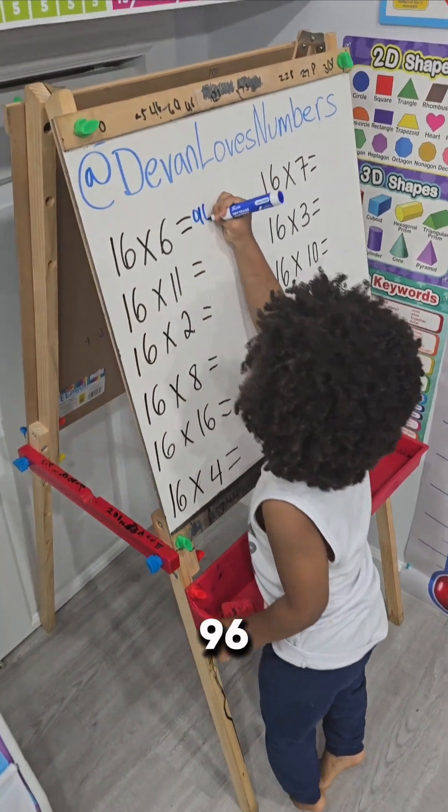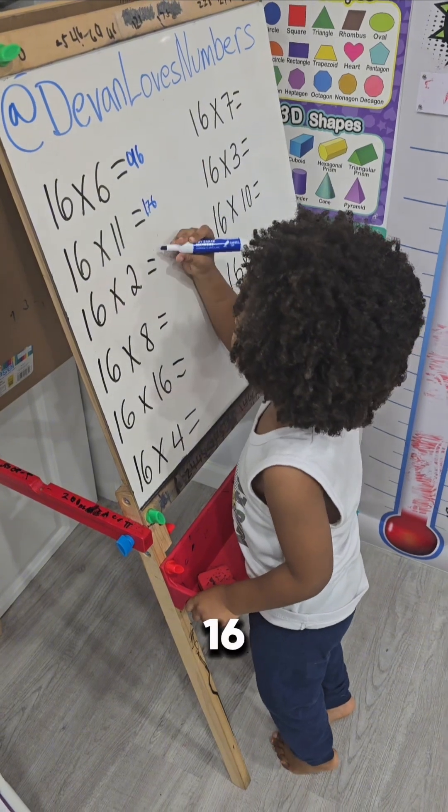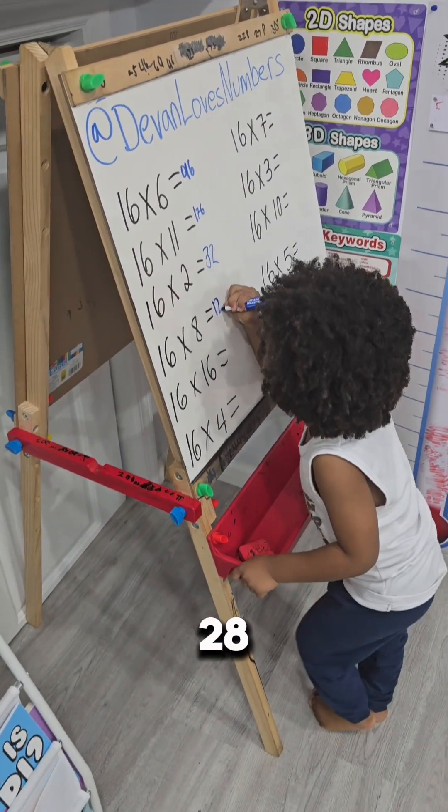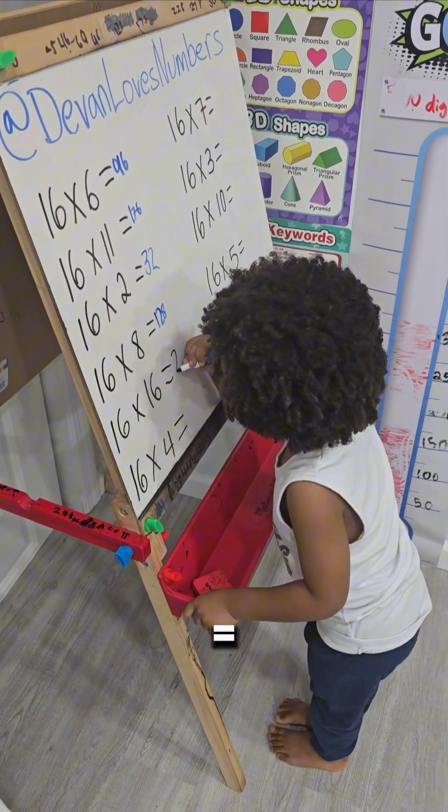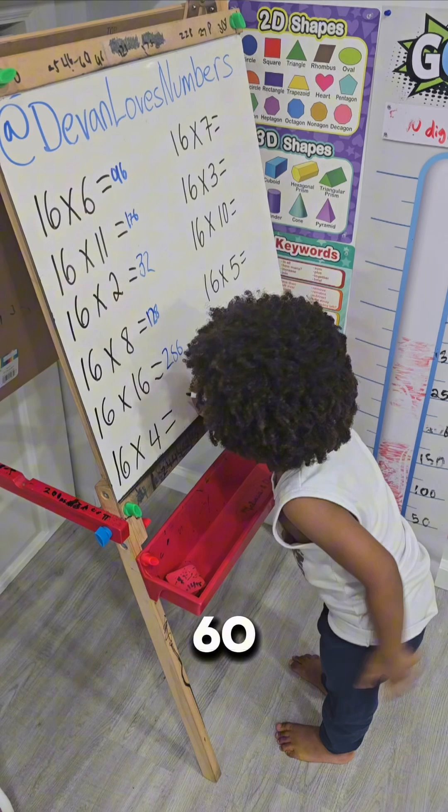16 times 6 equals 96. 16 times 11 equals 176. 16 times 2 equals 32. 16 times 8 equals 128. 16 times 6 equals 256. 16 times 4 equals 64.